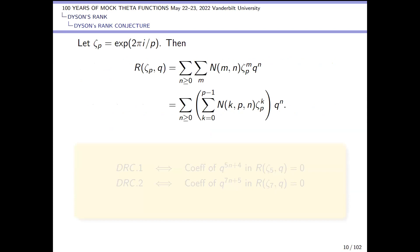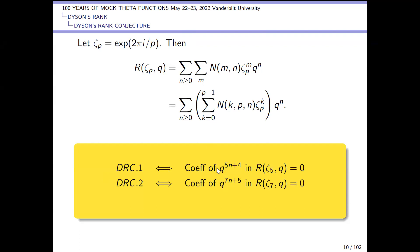Here's an interesting fact: take the rank generating function and substitute z equal to a p-th root of unity, where p is a prime. Then the powers of zeta clump together according to the residue of the exponent mod p. You collect terms and you get this expression, and Dyson's first rank conjecture is equivalent to the coefficient of q to the 5n+4 in this generating function being zero, and similarly for seventh roots of unity with 7n+5. That's because all these coefficients are integers and the minimal polynomial of zeta is 1 + zeta + ... + zeta^(p-1) = 0.